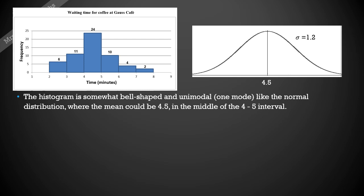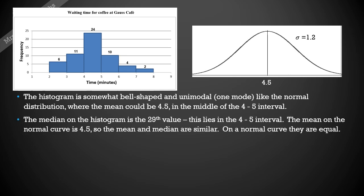We'll just say that it could sit there in the middle of that 4.5 interval because that's a fairly symmetrical shape that we've got. The median on the histogram is the 29th value because we've got 57 of them. The 29th will be right in the middle, and if you add up the 6 and the 11, the 29th value will end up in that category of 4 to 5 here in the middle section.